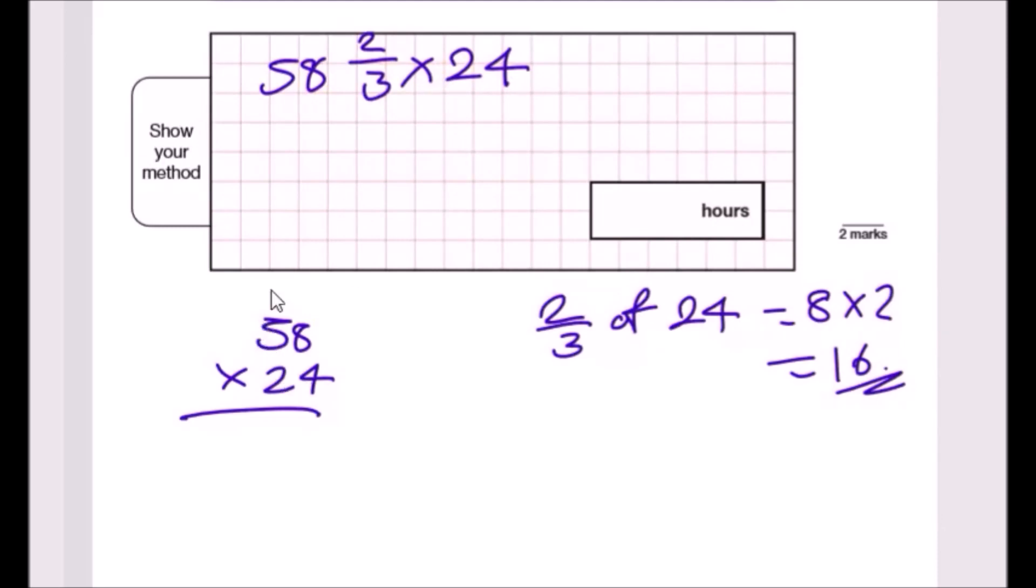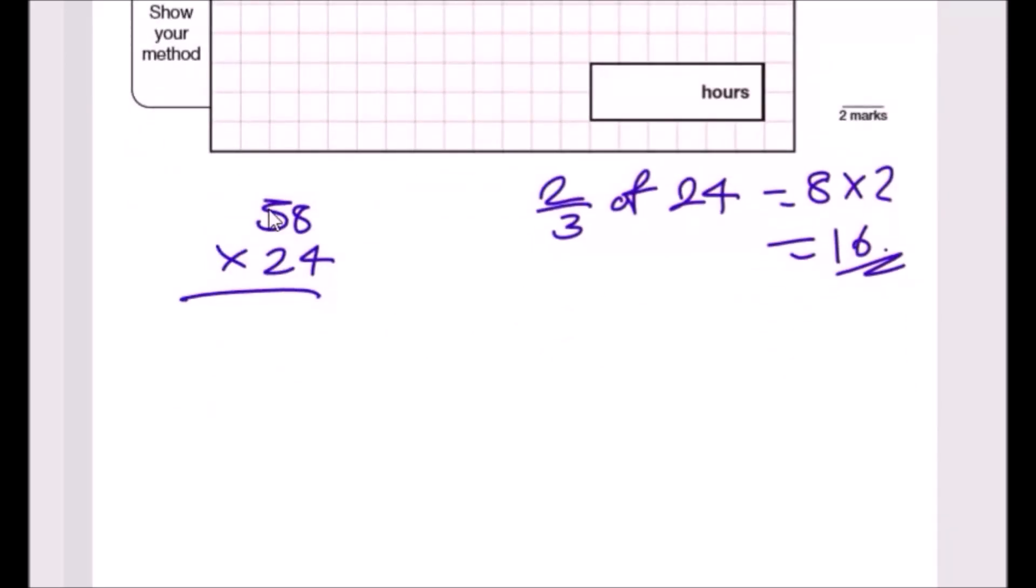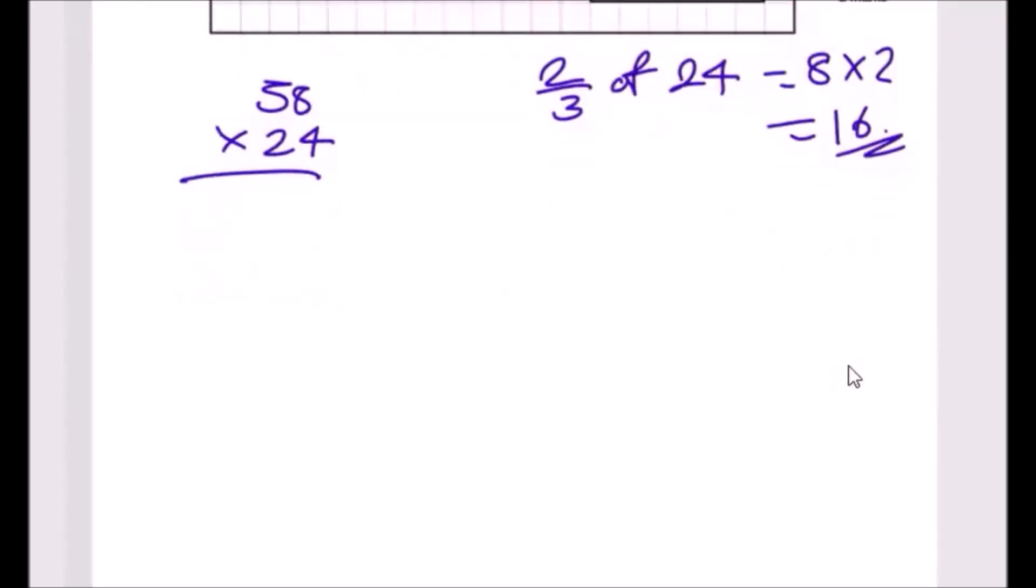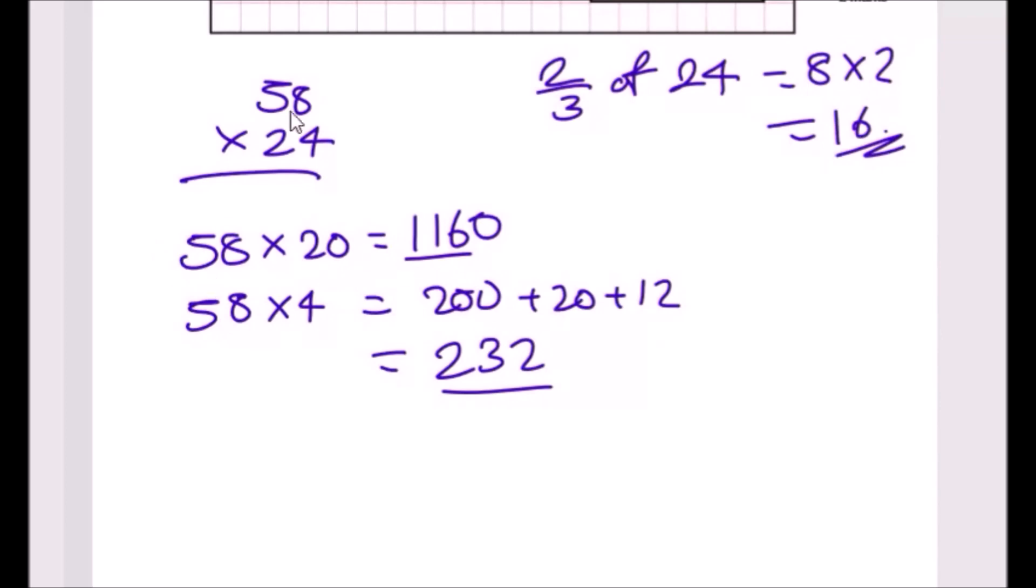That's 16 hours done. Now here comes the main one. What I would do is firstly 58 times 2, and then 58 times 4 separately. 58 times 20: double 50 is 100, double 8 is 16, so that's 116 with an extra zero, so 1160. Next one is 58 times 4. 4 is just double 2, so we have to double 116. Double 100 is 200, double 10 is 20, double 6 is 12. Add them all up, you should get 232.